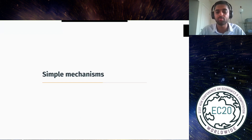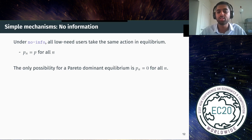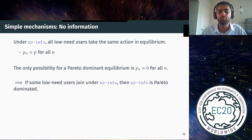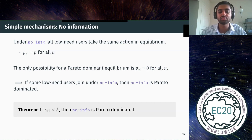Now let me compare welfare under information design against simple benchmarks. Under the no information mechanism, all users take actions independent of the queue length, so p_n = p for all n. This means the only possibility for a Pareto dominant no-information equilibrium is when p_n = 0 for all n — otherwise it lacks a threshold structure. We conclude that if some low-need users join under no information, then no information must be Pareto dominated. Low-need users will join if the system is not already overwhelmed by high-need users, so as long as that holds, withholding information can never be beneficial.